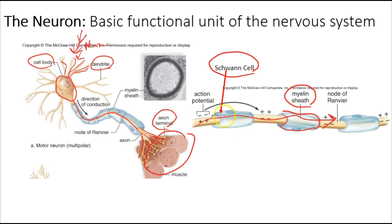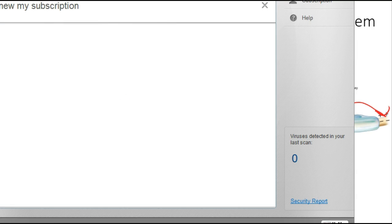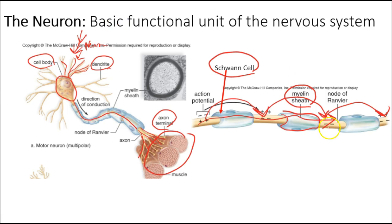The myelin sheath speeds up conduction because the action potential jumps from node to node — from here to here — across the spaces that are not insulated. This is called saltatory conduction. The action potentials jump from node to node to node, and that speeds up conduction of the action potential along the axon.